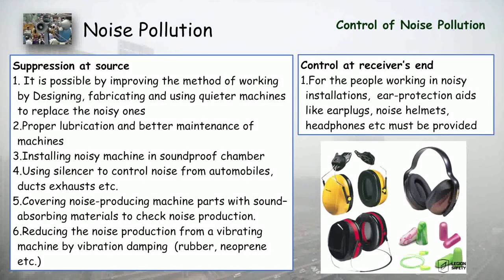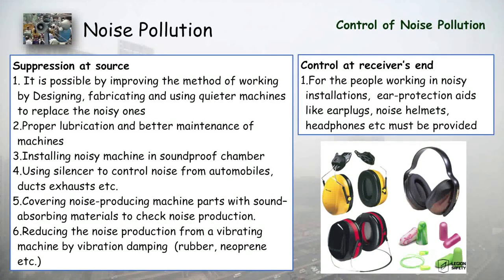For suppression at the source, we should improve the design and fabrication of quieter machines, reducing noise from mixers, washing machines, and other devices. Proper lubrication and better maintenance of machines helps reduce friction noise at joints. Additionally, noisy machines should be installed in soundproof chambers, which need not be very costly, to contain the noise.